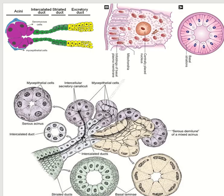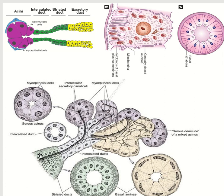Now the duct portion. There are three types of duct present. The initial portion is known as the intercalated duct, then the striated duct, and the excretory duct. The intercalated duct is formed with simple cuboidal epithelium, and the striated duct is formed by low columnar to columnar epithelium.